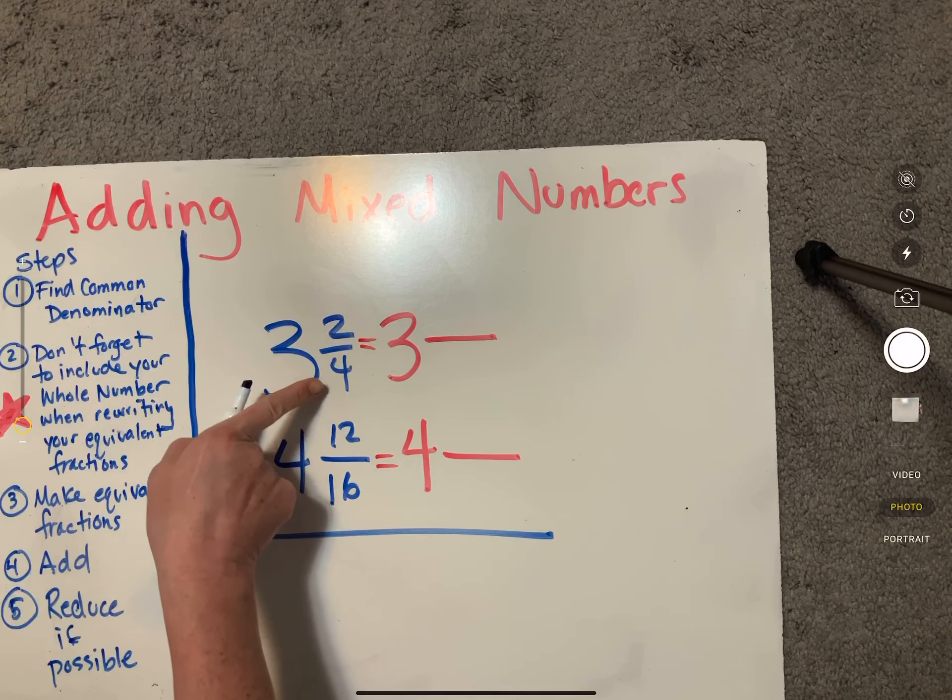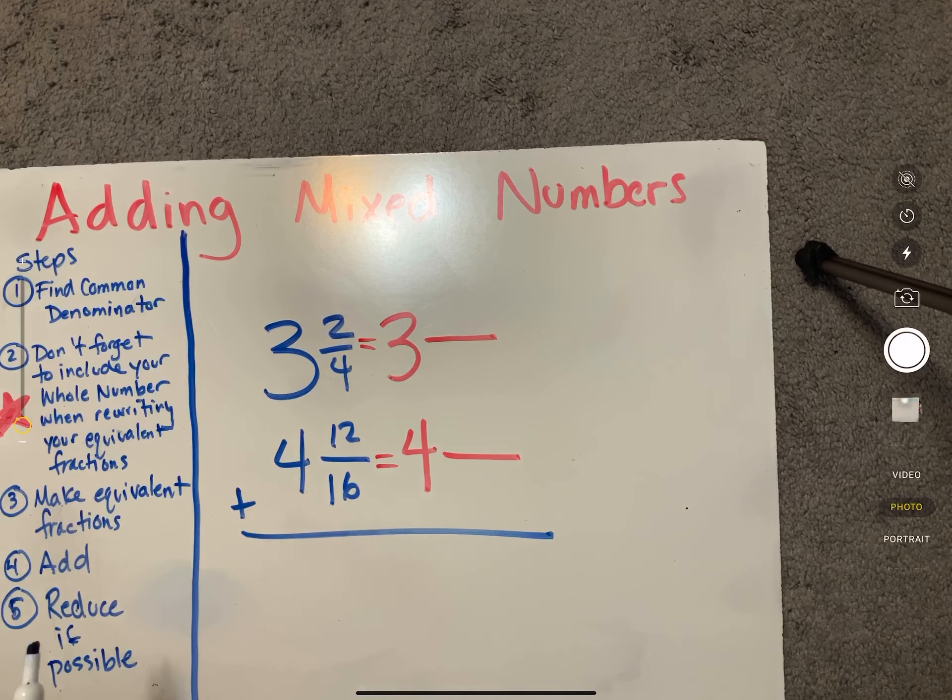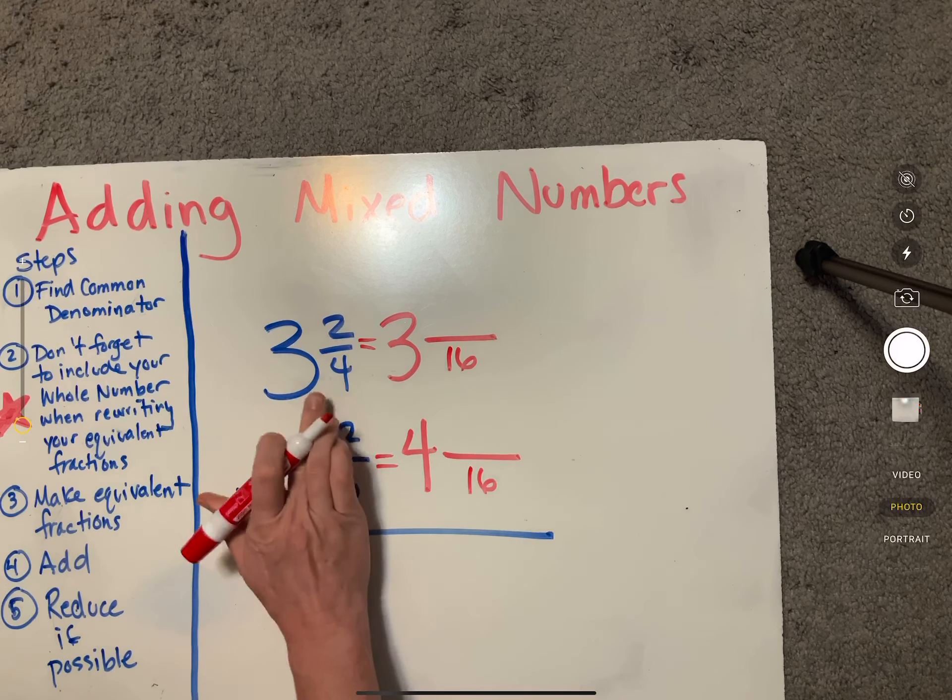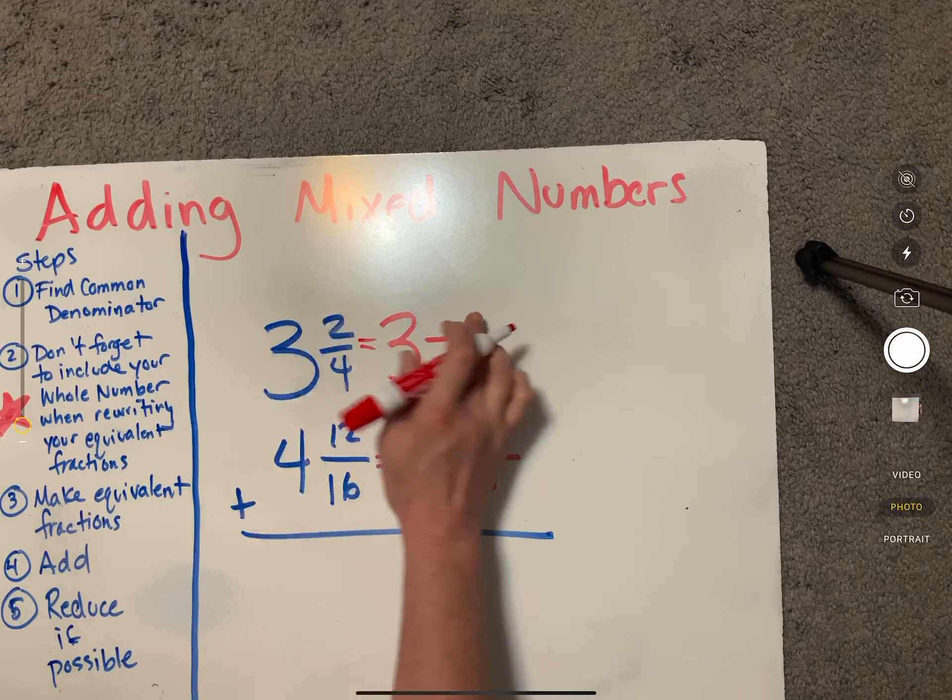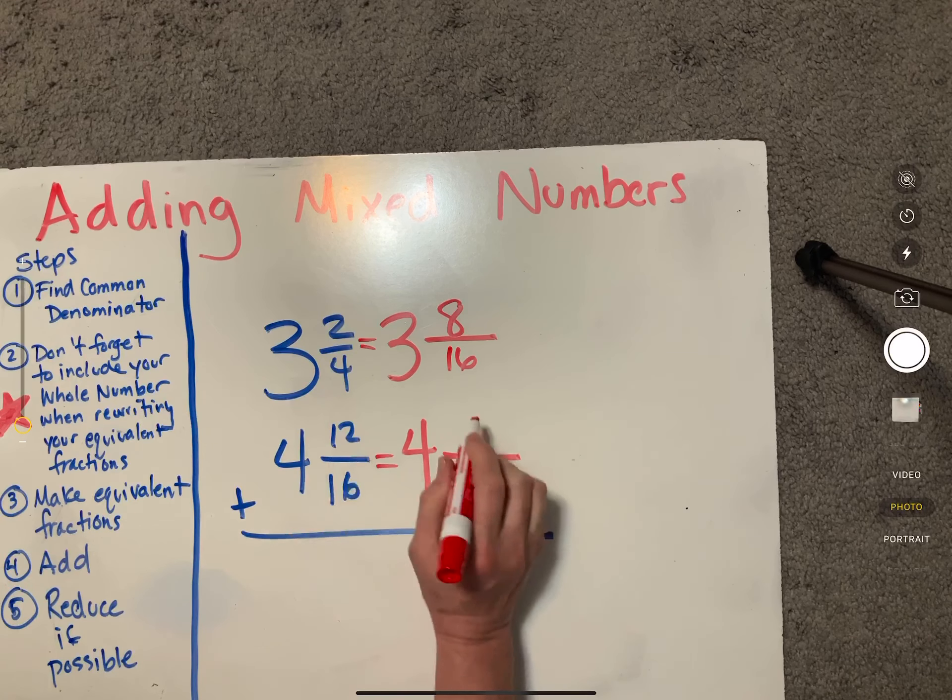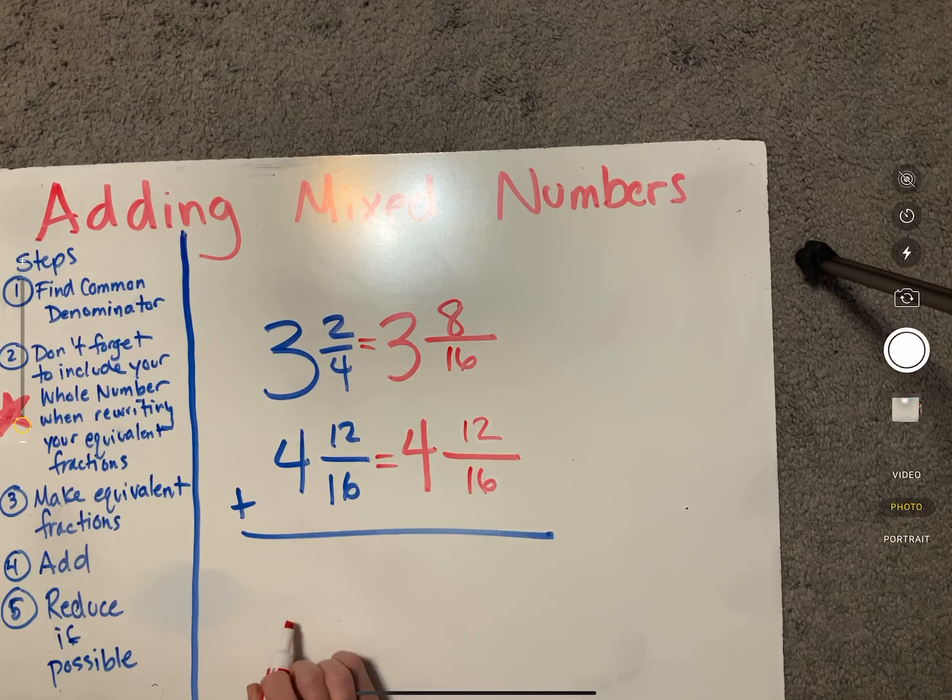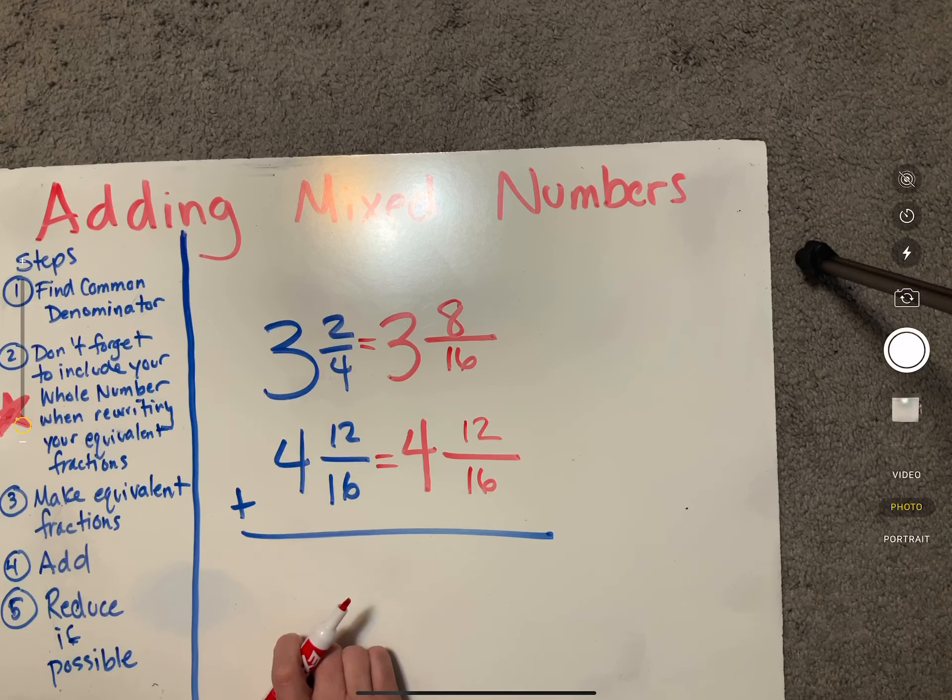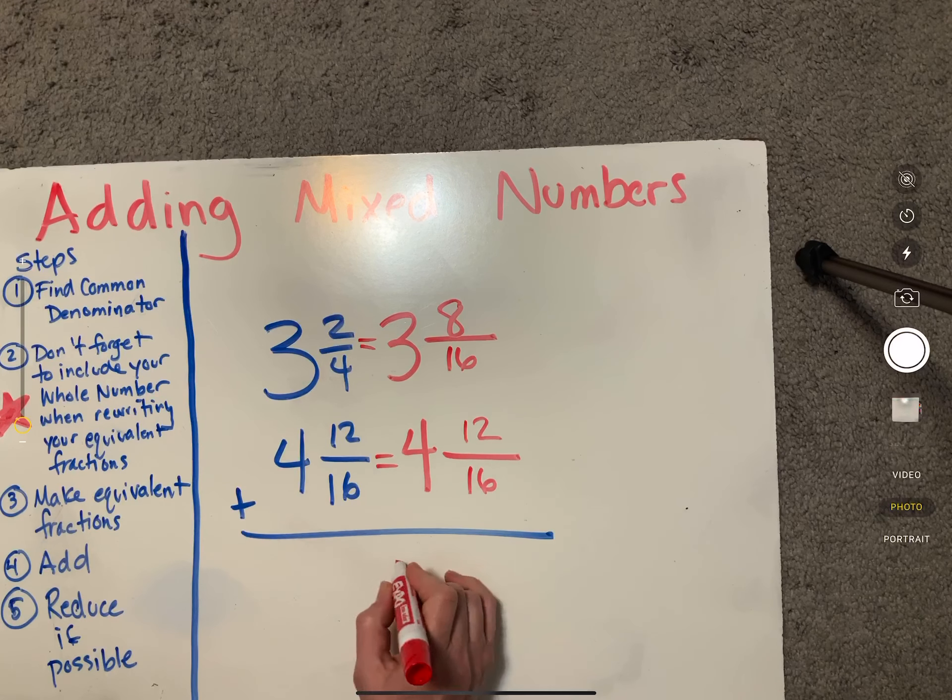Lowest common denominator here, I've got 16. Four times four is 16, two times four is eight. Sixteen times one is 16, twelve times one is twelve. So now I'm ready to add this up. I get seven.